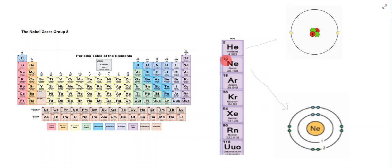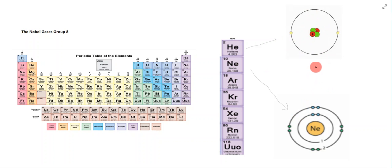So neon has 10 protons and 10 neutrons in its nucleus. With 10 protons there are also 10 electrons. The electron configuration — the way electrons are spread out in the shells — is two electrons in the first shell and eight electrons in the second shell. The outer shell is full with eight electrons, so neon doesn't need to gain or lose any electrons, which makes noble gases the least reactive elements.